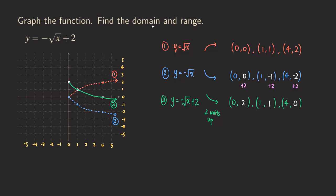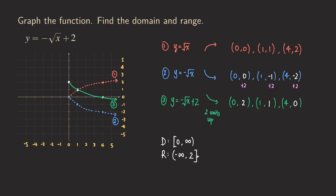There's one more thing — finding the domain and range. Looking at the graph, the domain starts at the smallest x-value of zero, which is included, and goes to infinity, so the domain is [0, ∞). For the range, the function keeps going down forever with no lower bound, so we have negative infinity, and the highest point is (0, 2) with a y-value of 2, which is included. The range is (−∞, 2].